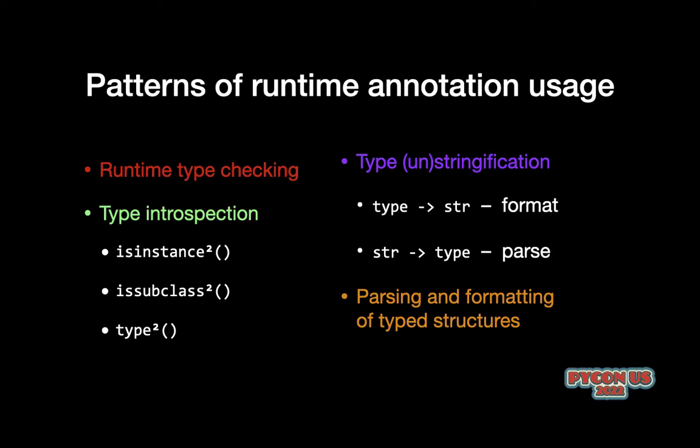Here are more or less four patterns that all the libraries I've looked at are using. One is just straight up doing type checking at runtime, like adding a decorator to a function to verify that its inputs and outputs are what is expected. There are also beefed-up versions of built-in type introspection functions that can look at not just runtime class-based types, but can look at things like unions and typed dicts.